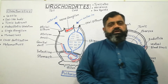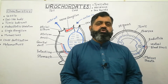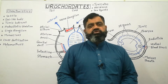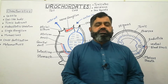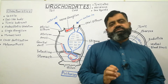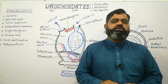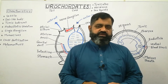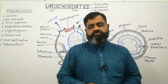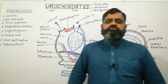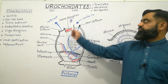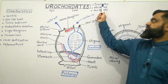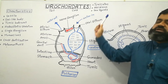Urochordata are animals which belong to phylum Chordata, and Urochordata is a subphylum of phylum Chordata. Phylum Chordata contains animals which have four important characteristics: notochord, dorsal hollow central nervous system, gill pouches, and post-anal tail, which we have already discussed in the previous lecture. 'Uro' means tail and 'chordata' means chord. These animals are also known as tunicates, ascidians, and sea squirts.